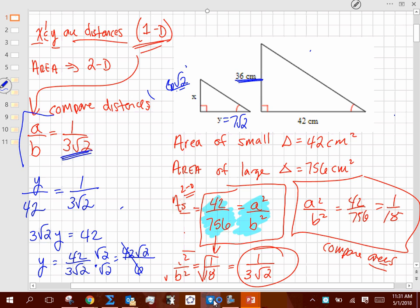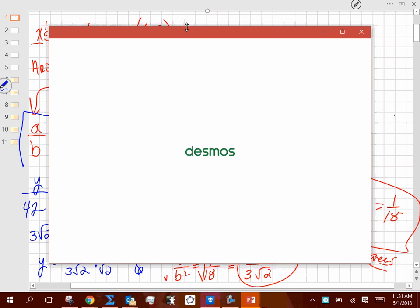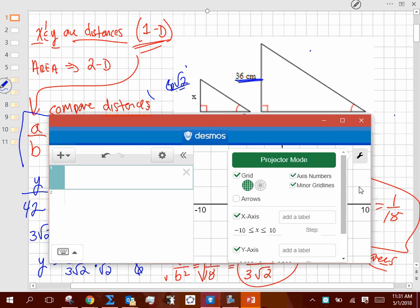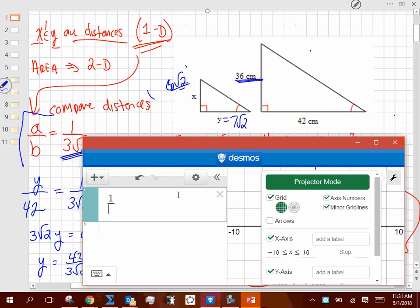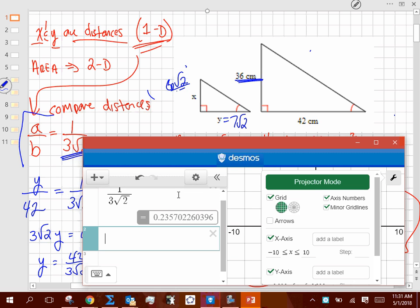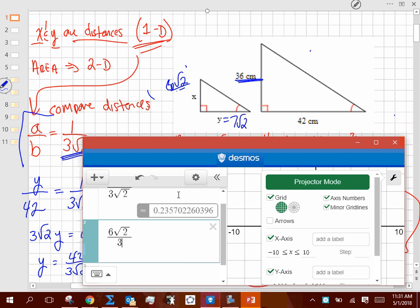And just to convince you, maybe I will just grab Desmos here real quick to show you that the algebra makes sense. If I take 1 divided by 3 square root of 2, it gives me that decimal. Now, if I take 6 square root of 2 and divide that by 36, does it give me the same decimal? And that's how they should relate. Same thing should happen when I take 7 square root of 2, I said it should be close to 10. And if I divide that by 42, does it give me the same decimal that 1 over 3 radical 2 gave me? So that's kind of a check that you could use.